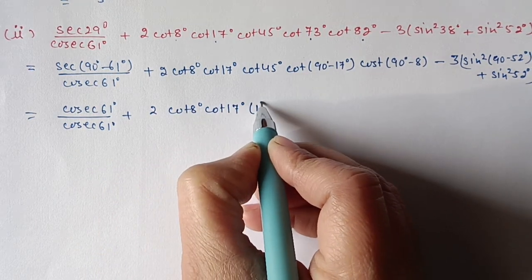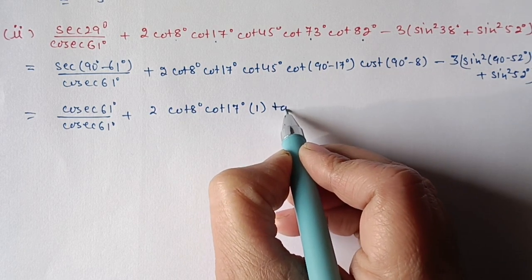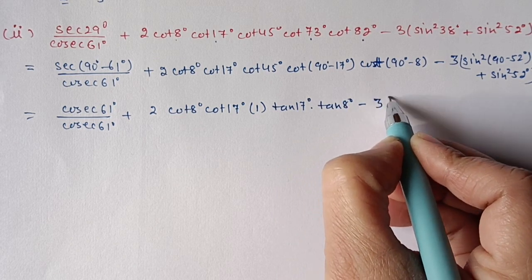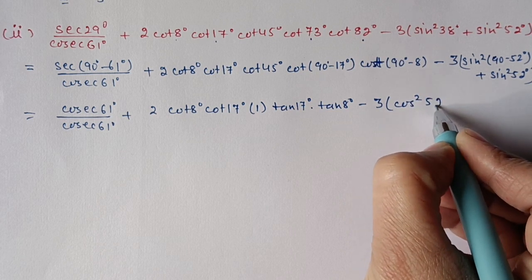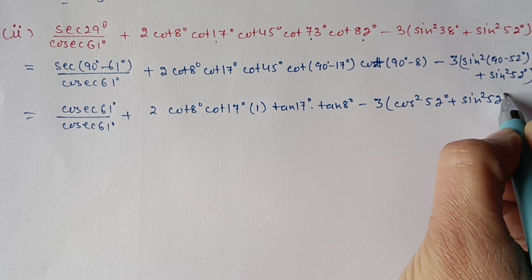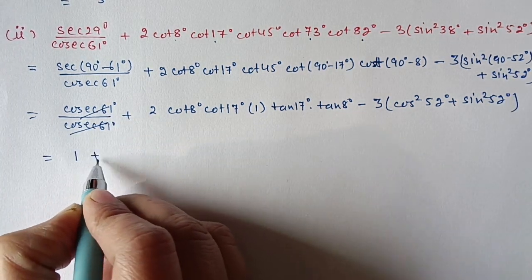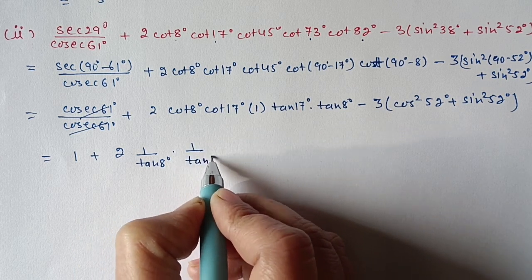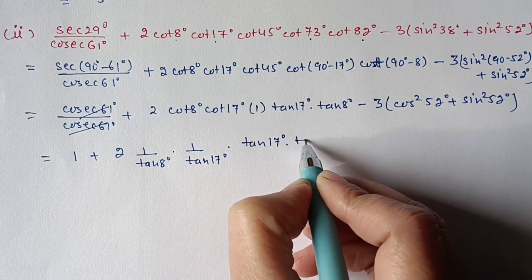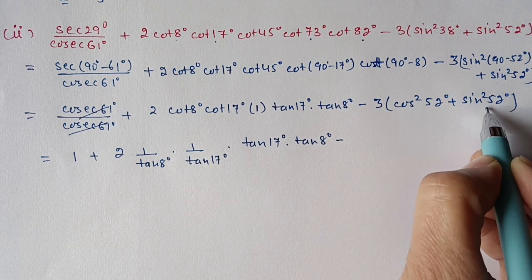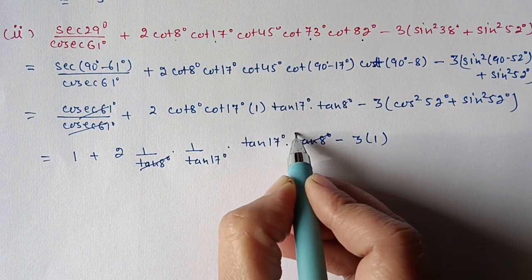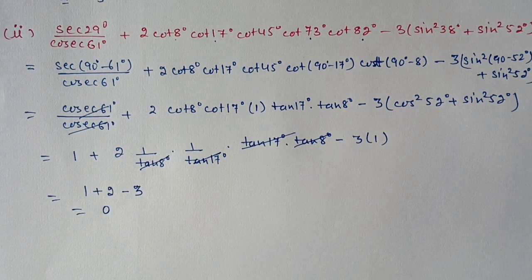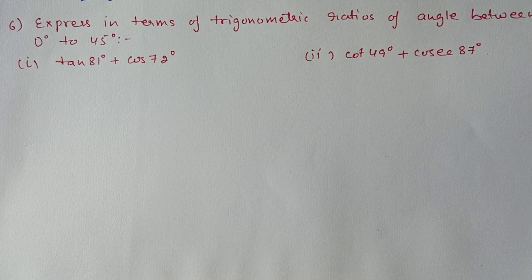This will become cosec61 upon cosec61. Then 2·cot8·cot8·cot17·cot45 — and cot45 value is 1 — cot(90−17) will become tan17, and cot(90−8) will become tan8. Then 3·[sin(90−52) will become cos52, plus sin²52]. These cancel out. cot8 = 1/tan8 and cot17 = 1/tan17, tan17 and tan8 cancel out. cos²52 + sin²52 = 1. So we have 1 + 2(1)(1)(1)(1)(1) − 3(1) = 1 + 2 − 3 = 0.